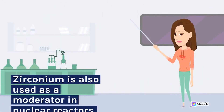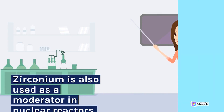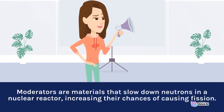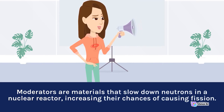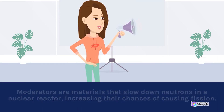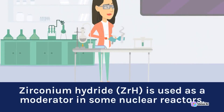Zirconium is also used as a moderator in nuclear reactors. Moderators are materials that slow down neutrons in a nuclear reactor, increasing their chances of causing fission. Zirconium hydride (ZrH) is used as a moderator in some nuclear reactors.